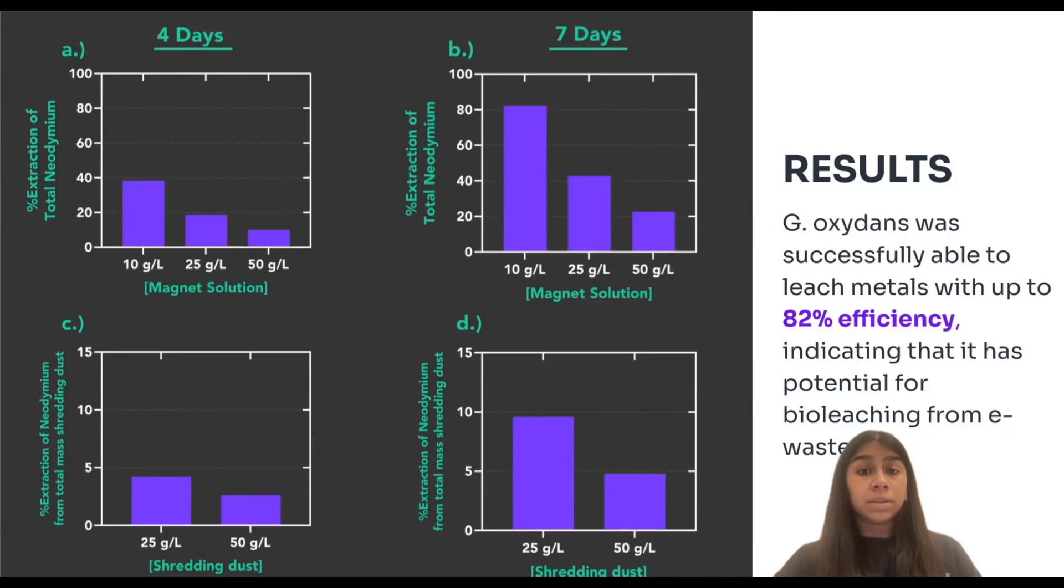Results show that after seven days, we were able to leach neodymium from samples with up to 82% efficiency. These results indicate that G. oxydans has strong potential for bioleaching from e-waste.